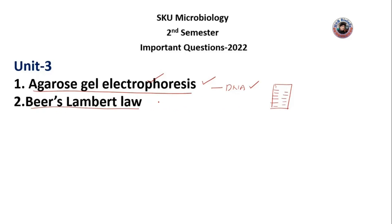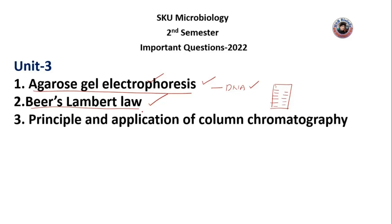The third important principle and application is column chromatography. Column chromatography uses a column with different mobile phases and stationary phases. We use chromatography for separation. This covers column chromatography and its complete information.